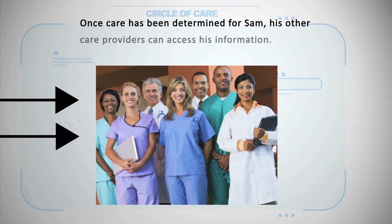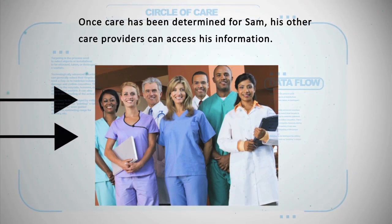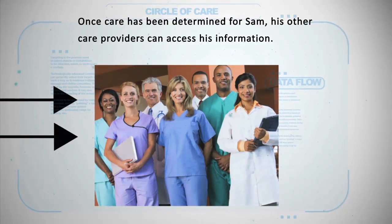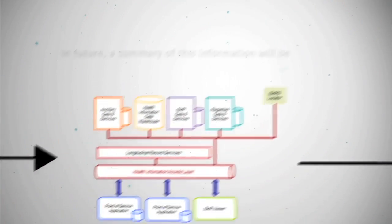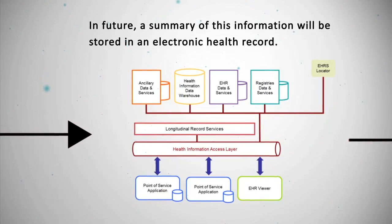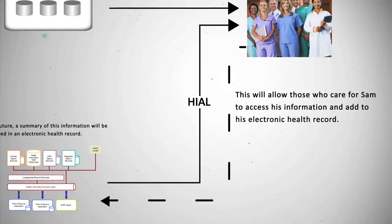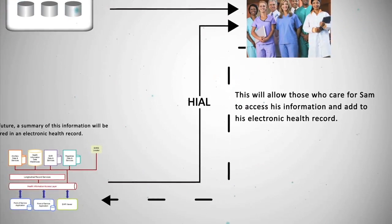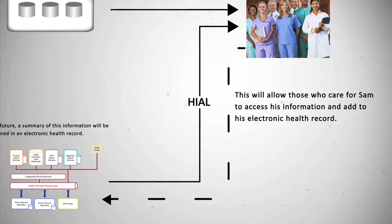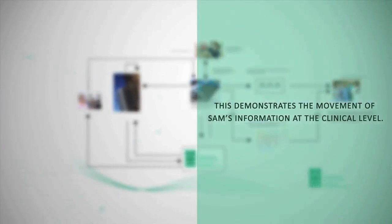Once care has been determined for Sam, his other care providers can access his information. In future, a summary of this information will be stored in an electronic health record. This will allow those who care for Sam to access his information and add to his electronic health record. This demonstrates the movement of Sam's information at the clinical level.